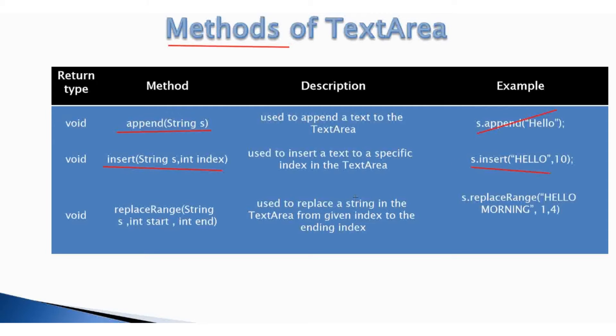The third method is replaceRange, with three parameters, used to replace a string in a TextArea from a given starting index to a given ending index. We can use all methods of TextField except the echoChar methods. You can learn these methods by clicking on the info button.